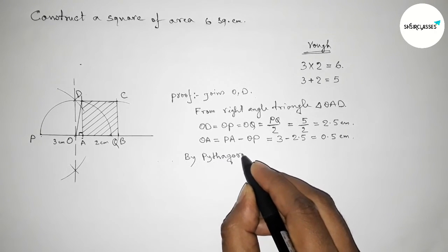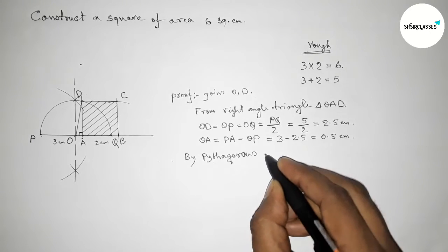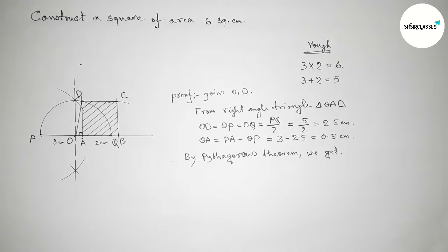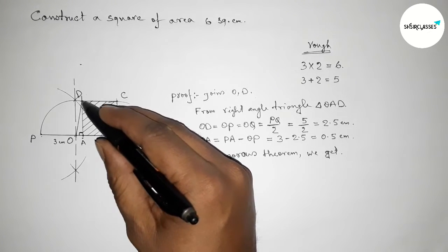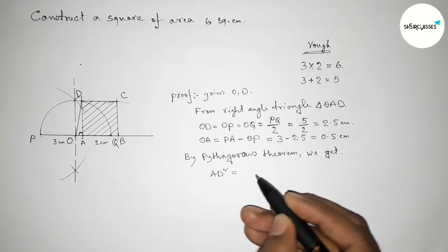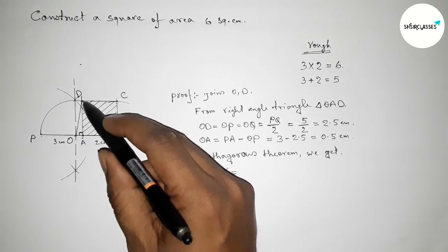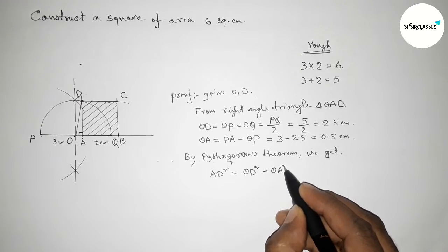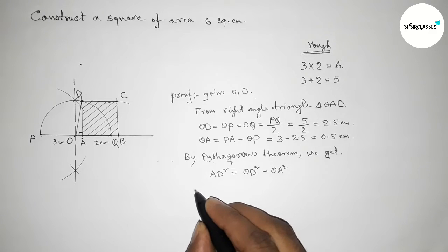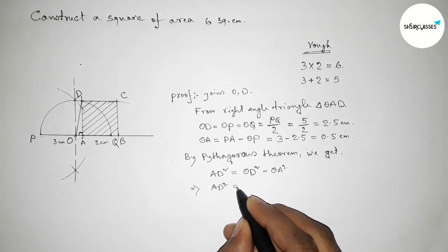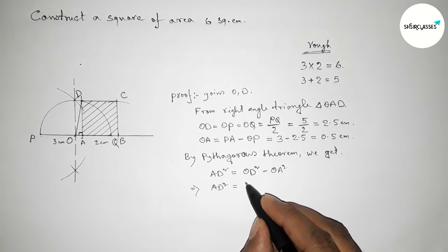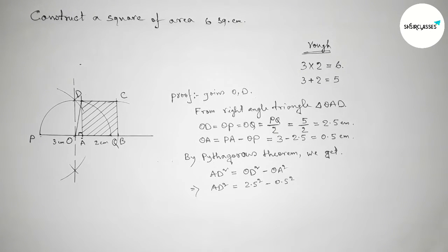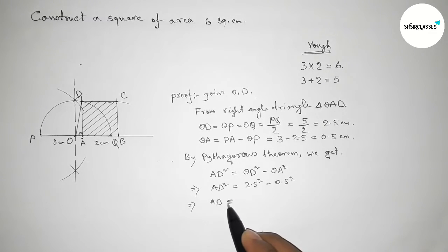Now applying the Pythagorean theorem to find the value of AD. From right angle triangle OAD: AD² equals OD² minus OA². This implies AD² equals 2.5² minus 0.5².